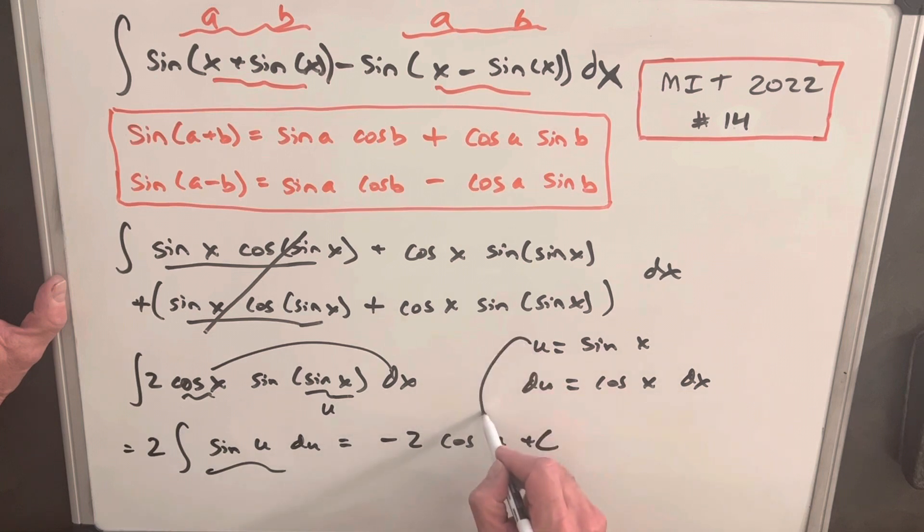Just need to back substitute, and so for our final solution we're going to have -2 cos(sin x) + c, and we're done.